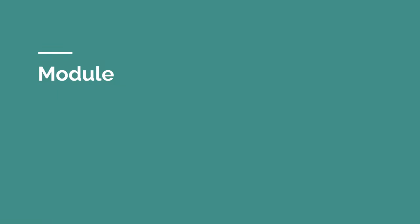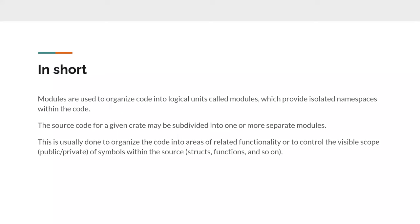Let's have a quick look at modules before going into code examples. In short, modules can be used to organize your code into logical units and provide isolated namespaces where you can control the visibility of types, functions, and other definitions. A crate can be divided into as many modules as you like and you don't need new files to create new modules — you also don't need to declare anything in Cargo about modules because that's entirely within the Rust language.